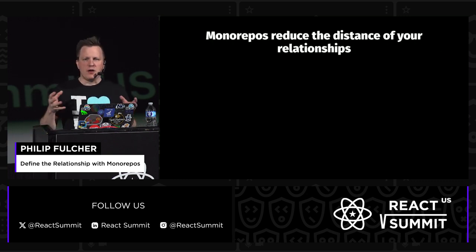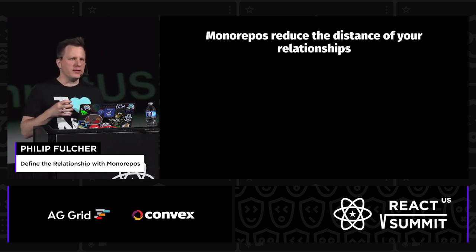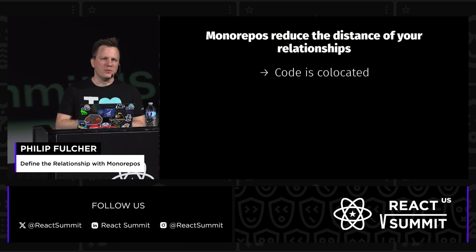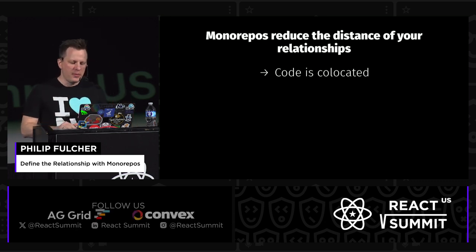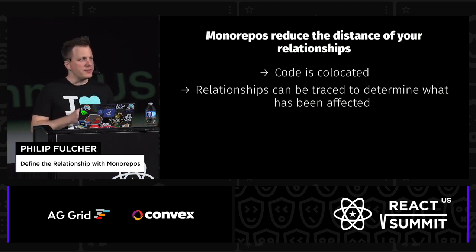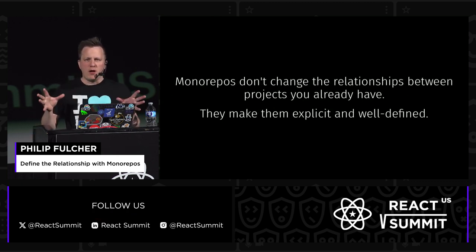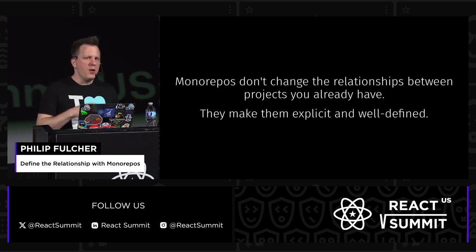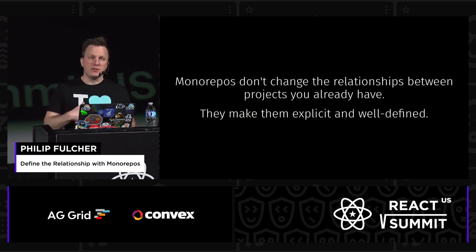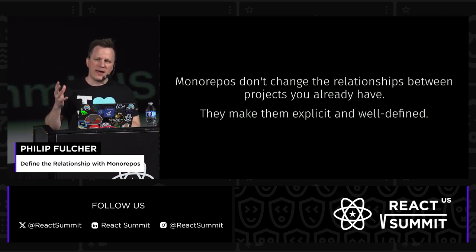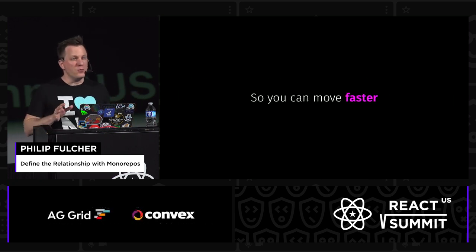Monorepos, when you put multiple projects together in a single repository, are going to reduce the distance of your relationships. That change you want to make in your button or your back end API is now co-located with the front end code that's going to consume it — it's in the same repo and we can import it and use all the tools that help us understand the impact of that change. With some helpful tooling from a monorepo tool, we can understand those relationships and trace them to determine what's been affected by our changes. When we talk about putting many projects into a single monorepo, we're not actually changing the relationships between projects we already have — we're making them explicit. We're making sure we know those relationships exist and how to understand the impact of changes through them. Those relationships become well-defined, and through that, monorepos are going to help you move faster.